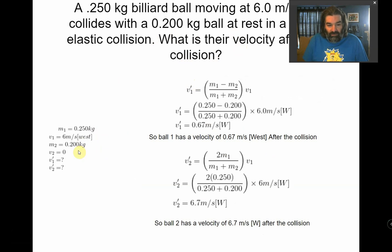Again, write out what you know. Mass of the first ball, its velocity. Mass of the second ball, its velocity. And then to find the first ball's velocity after, it's m1 minus m2 over m1 plus m2 times its initial velocity, which works out to 0.67 meters per second west.